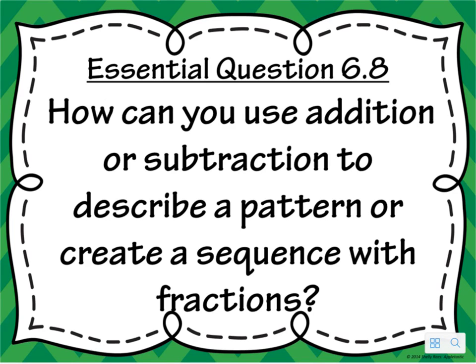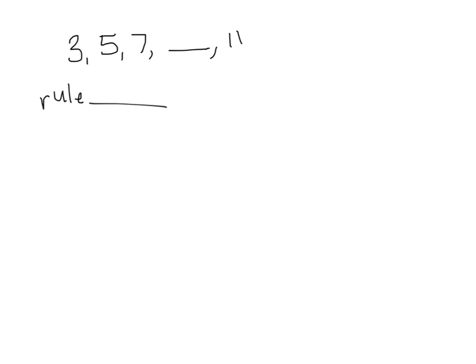Chapter 6, Lesson 8, Essential Question. How can you use addition or subtraction to describe a pattern or create a sequence with fractions? Looking right here, we have a pattern or a sequence. Each of these individual digits or numbers is a term in the sequence. If I said find the missing term, we would compare 3 to 5 and notice that 3 plus 2 equals 5. From 5 to 7, we notice there's plus 2. So the next one, to continue that, we would plus 2. Our missing term would be 9, and we would double check that 9 plus 2 gives me 11. So my rule for that pattern or sequence is plus 2.